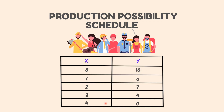Again, if the country does not produce good Y and devotes its entire resources to the production of X, then it can produce a maximum of 4 units of X. Hence, the point (4, 0) will be a combination of the two goods on the production possibility curve. In this way, employing the entire resource — labor — the country can produce 1 unit of good X and 9 units of good Y, or 2 units of good X and 7 units of good Y.